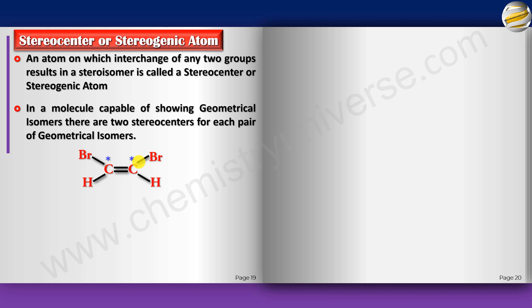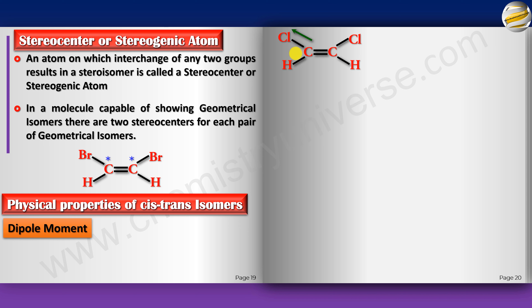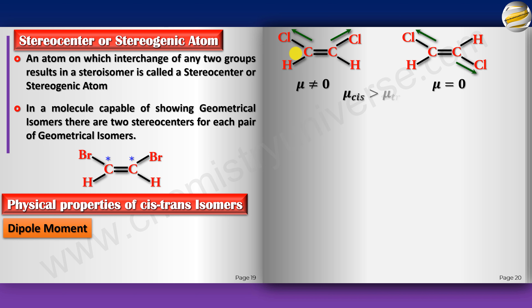Now let's look at the physical properties of cis and trans isomers. First, dipole moment: in general, the dipole moment of trans is less than cis. For example, in 1,2-dichloroethene, the two C–Cl bond dipoles partially cancel in the trans form (giving μ=0 for symmetric trans), while in cis they add up (μ≠0). So generally, cis has a greater dipole moment than trans — but not always.